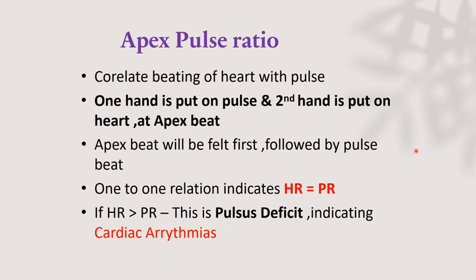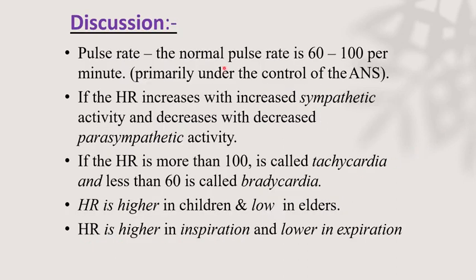The normal pulse rate is 60 to 100 per minute, which is primarily under the control of the autonomic nervous system. Heart rate increases with increased sympathetic activity and decreases with increased parasympathetic activity. If the heart rate is more than 100 it is called tachycardia; if less than 60 it is called bradycardia. Heart rate is higher in children and lower in elders, and also higher during inspiration and lower during expiration.